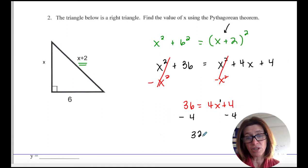And you get 32 equals 4x. You divide by 4. And x equals 8.